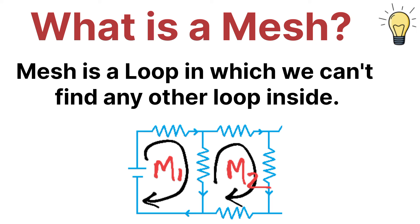These are the main differences between the loop and the mesh. In the case of a loop, there can be smaller loops inside, but in the case of a mesh, we can't find any other smaller loop inside the loop.